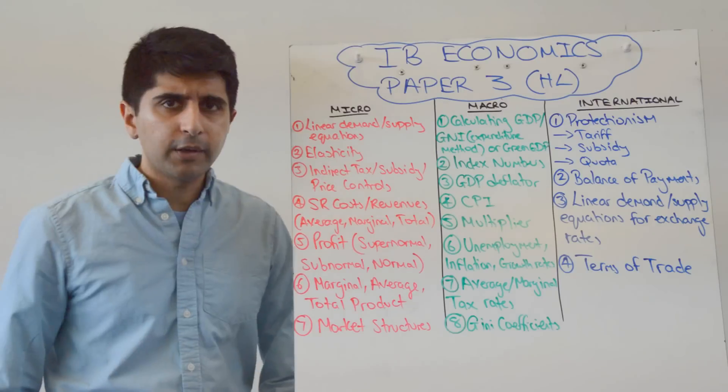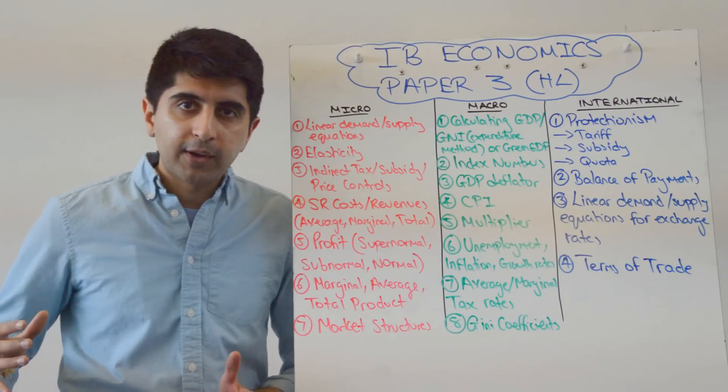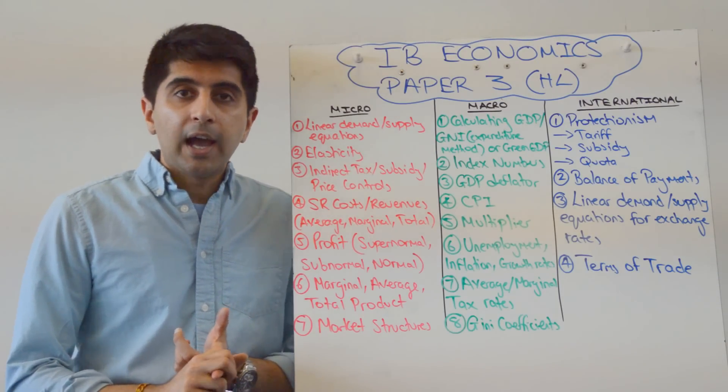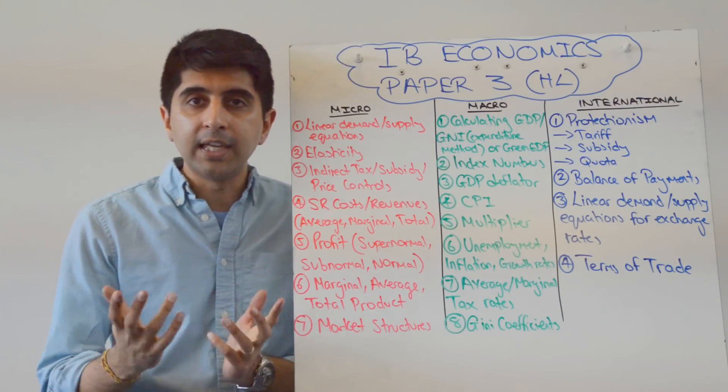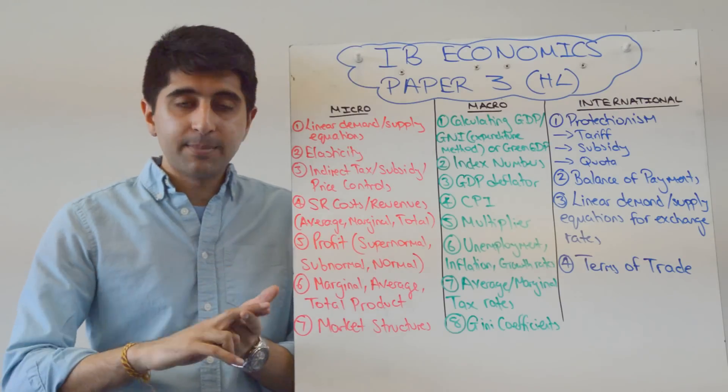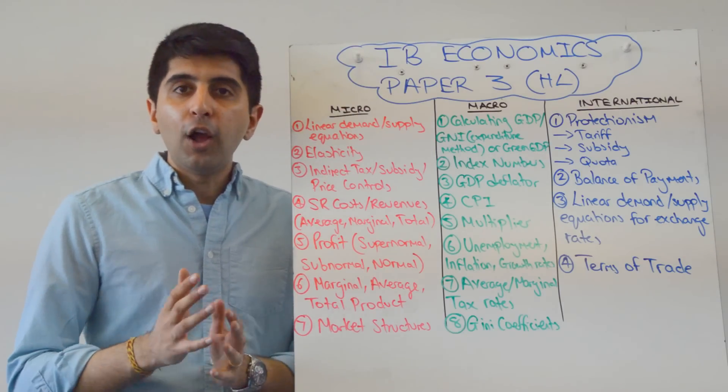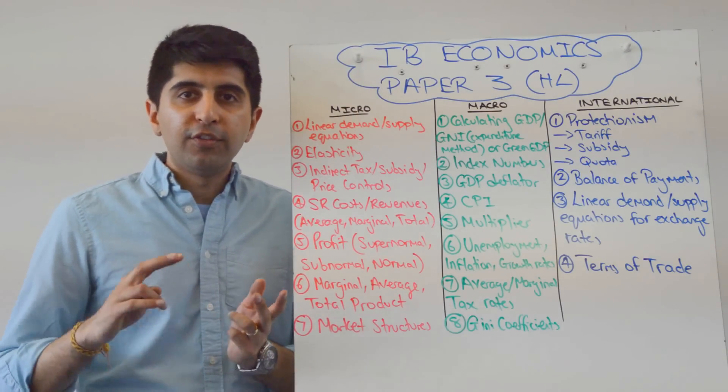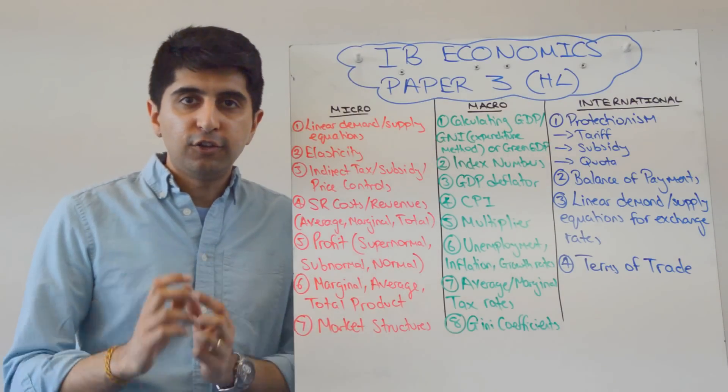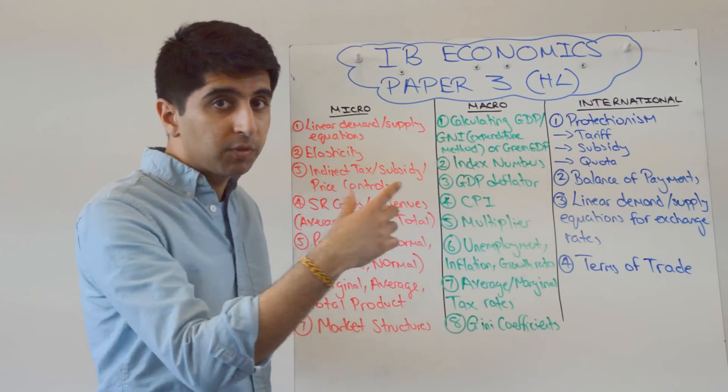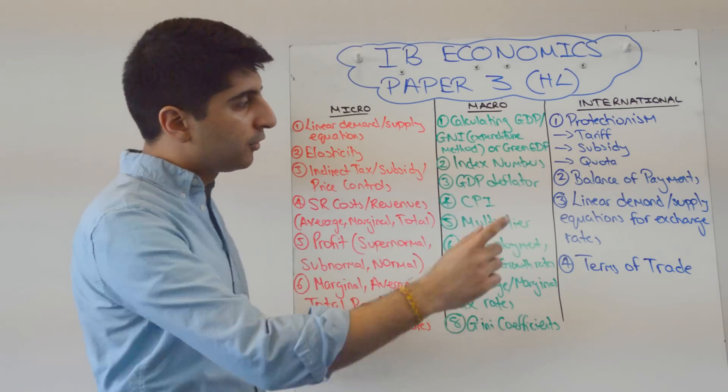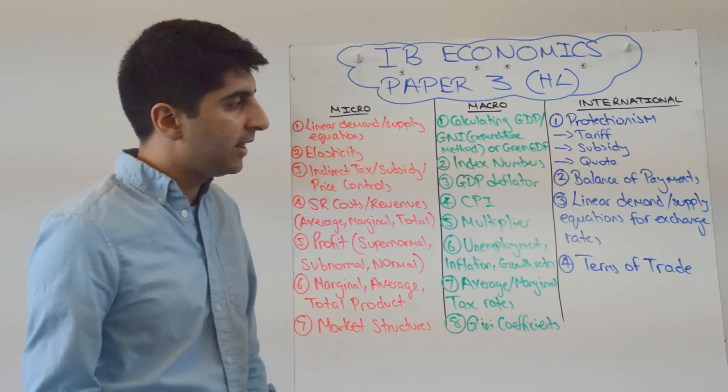For macro, what kind of calculations? Well, GDP calculations. So just calculating GDP using the expenditure method. That's the only method they'll ask you to use, i.e., just work out AD. C plus I plus G plus X minus N. They won't ask you the income method. They won't ask you the output method. Just the expenditure method to calculate GDP. Maybe it's GNI. Make sure you know the equation for that. Maybe it's green GDP. So various calculations of GDP there.